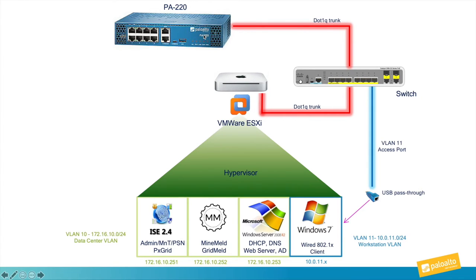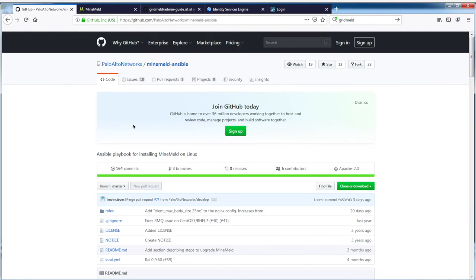For this demo, I will be logging into the Windows 7 machine using credentials belonging to different Active Directory users. These users will be assigned a different tag value, and we can see how the tag allows the Palo Alto firewall to apply enforcement based on whether the traffic is allowed or denied. Let's now take a closer look at each of the management interfaces in greater detail, starting with MineMeld.